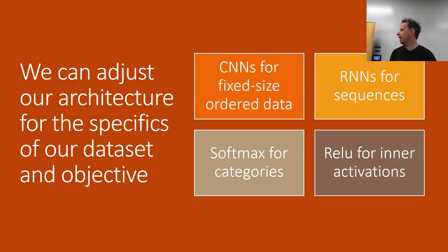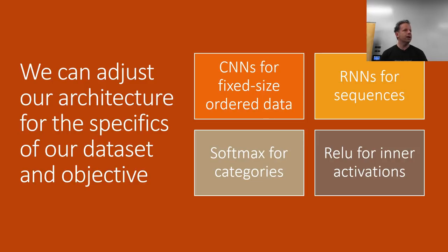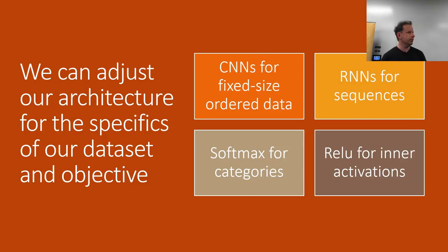We didn't talk a lot about architecture design in Part 1, because architecture design is getting less and less interesting. There's a pretty small range of architectures that generally work well quite a lot of the time. We've been focusing on using CNNs for generally fixed-size ordered data, RNNs for sequences that have some kind of state, and fiddling with activation functions like softmax for a single categorical outcome or sigmoid for multiple outcomes. Some of the architecture design in this part gets more interesting, particularly in this first session about object detection, but on the whole we spend less time on it because it's generally not the hard bit.